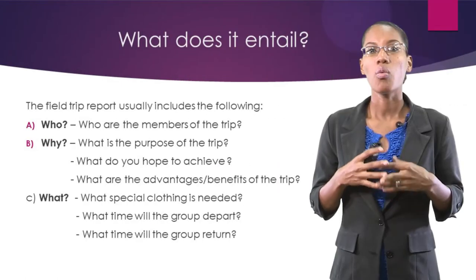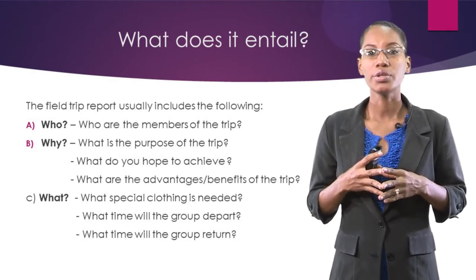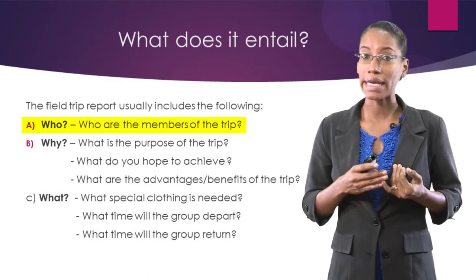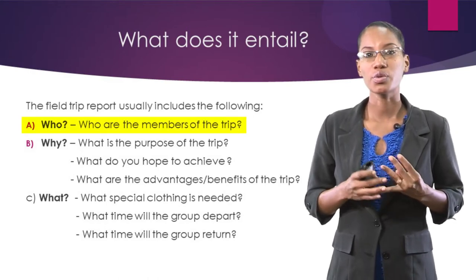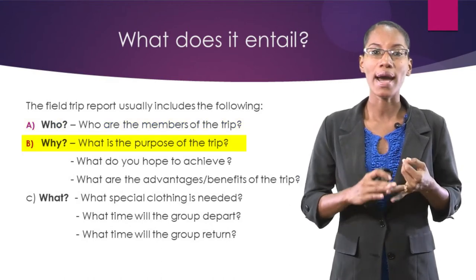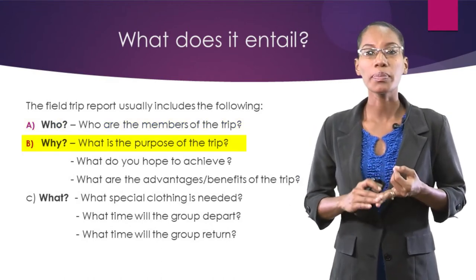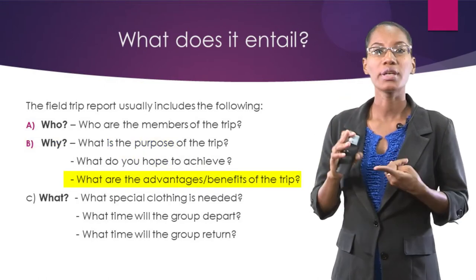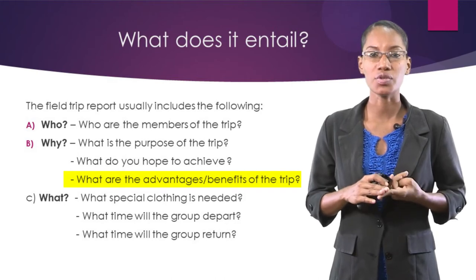Now, what does it entail? The field trip report usually includes the following: A — who, and this refers to who are the members of the trip. B — why, what is the purpose of the trip? What do you hope to achieve? What are the advantages or benefits of the trip?